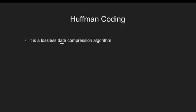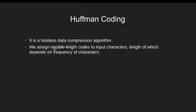Huffman coding is a data compression algorithm. If we have some data, it will compress it in such a way that while decoding it, no loss of information occurs. In this, we assign a variable length code to input characters. This variable length code depends on the occurrence or frequency of the character in our data. The most frequent character gets the smallest code and the least frequent character gets the largest code.